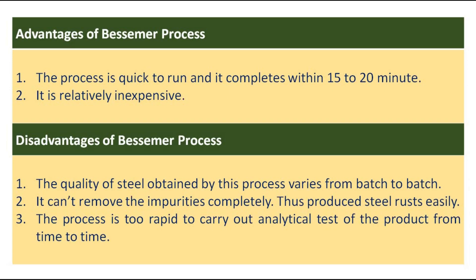Advantages of Bessemer Process: The process is quick to run and completes within 15 to 20 minutes. It is relatively inexpensive. Disadvantages of Bessemer Process: The quality of steel obtained by this process varies from batch to batch. It cannot remove the impurities completely. Thus the produced steel rusts easily. The process is too rapid to carry out analytical tests of the product from time to time.